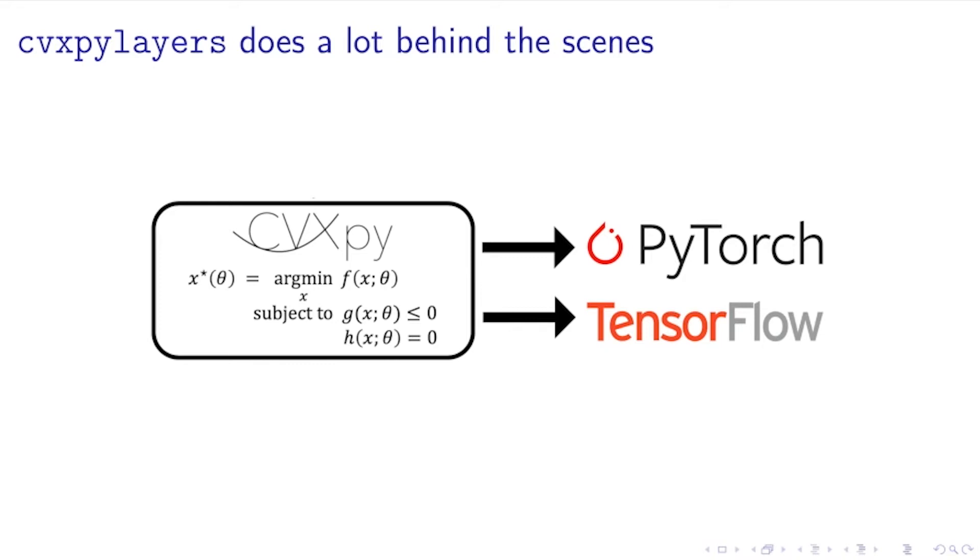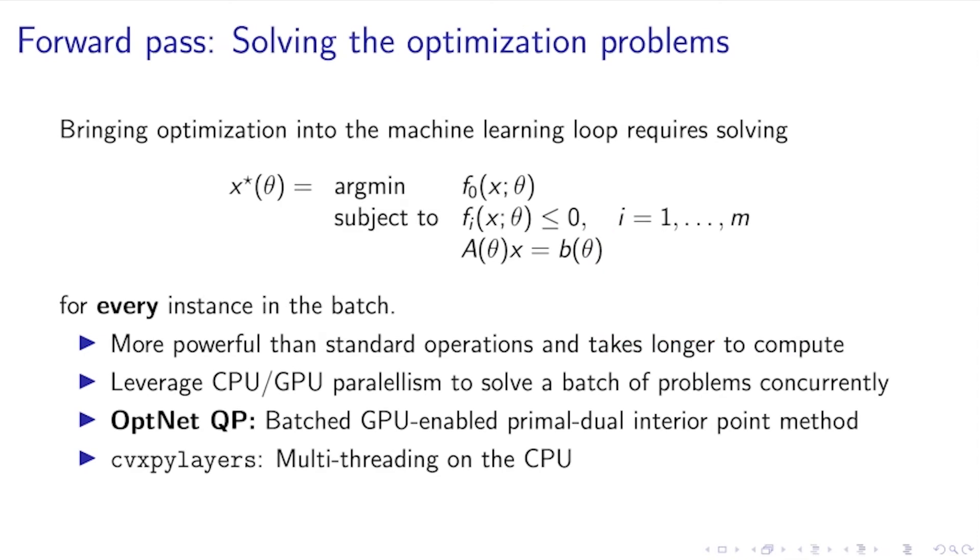In order to achieve this, we took a lot of care into efficiently implementing some of the operations behind the scenes. In this talk, I'm going to highlight just two of the key decisions in the forward and backward paths. The first one is on the forward path, solving the optimization problems. When you want to bring optimization into the machine learning loop, it requires this non-standard use of optimization where every time you pass data into your model, your model needs to internally solve optimization problems that look like this.